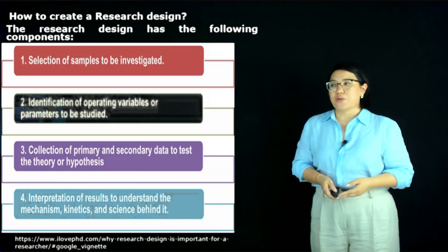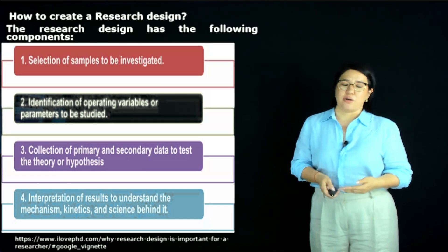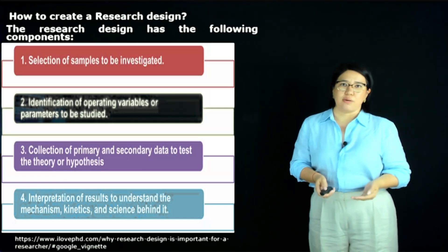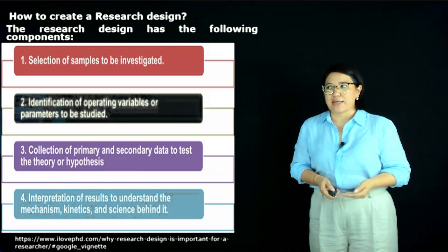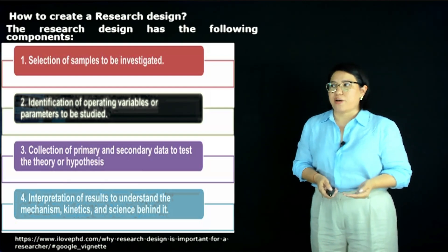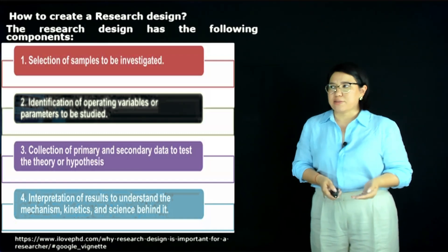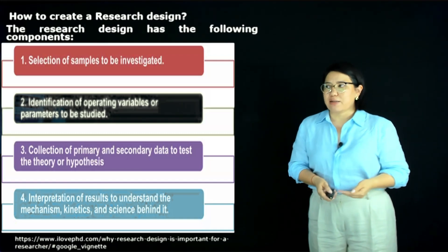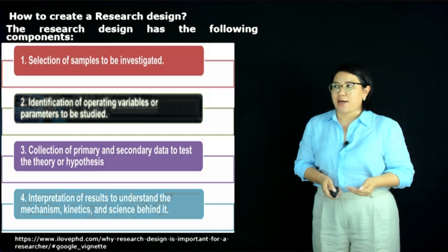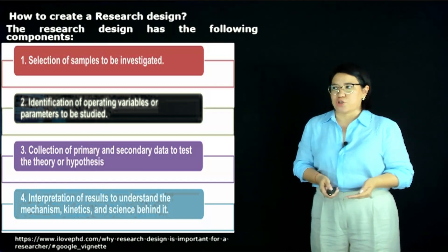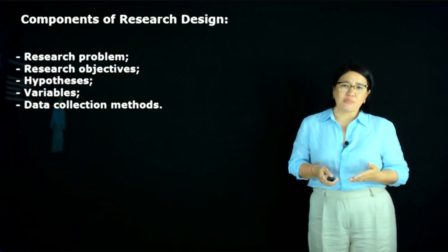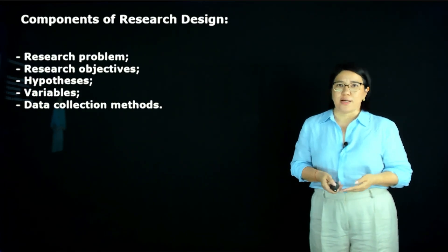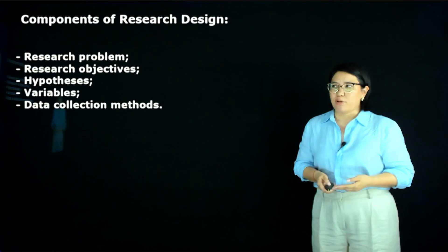How to create a research design is a question all students ask themselves. The key steps include: selection of the sample to be investigated, identification of variables or parameters to be studied, collection of primary and secondary data, and interpretation of results.